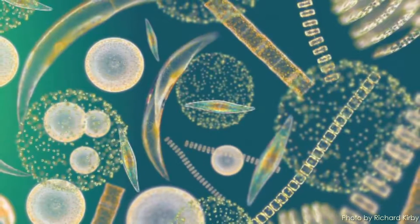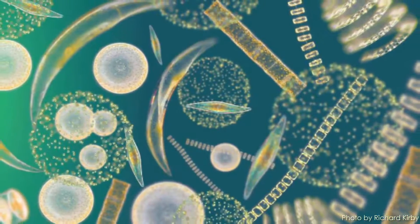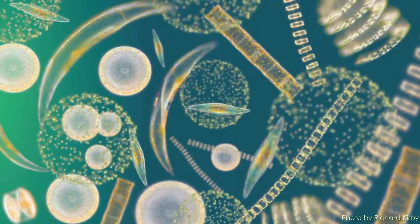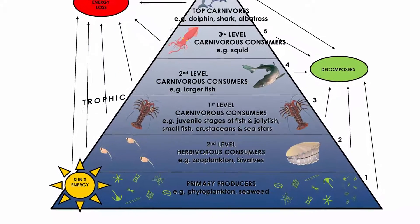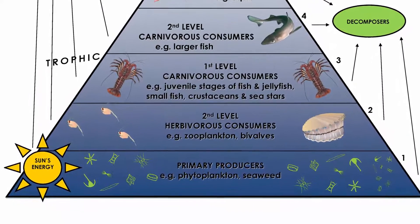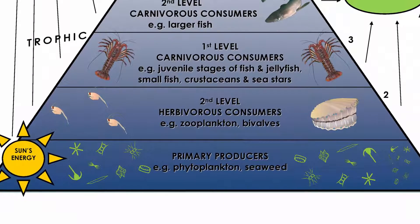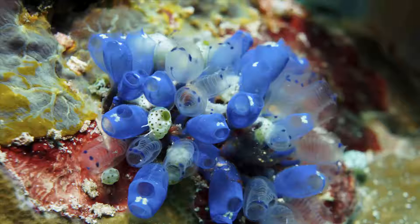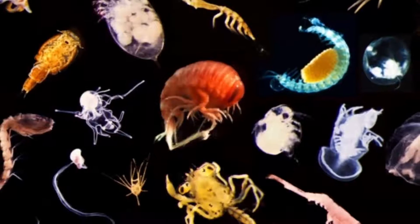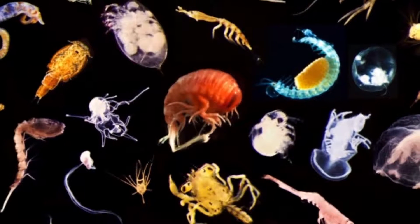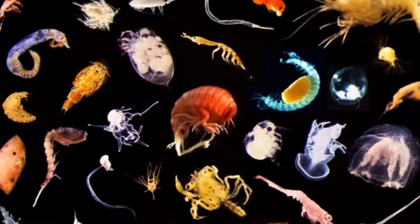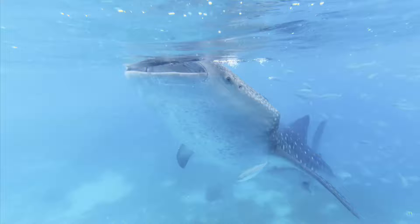Phytoplankton, also called microalgae, are microscopic single-celled plants that live in the water column both in freshwater and in marine environments. As a major component of primary productivity in our coastal waters, they are a major food source for filter feeding animals such as bivalve mollusks, sponges, and tunicates, as well as zooplankton — small, often microscopic animals that, as primary consumers, are at the base of the food chain, consumed by larger crustaceans and fish.